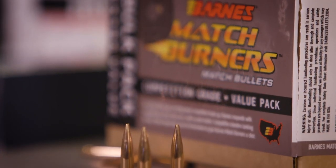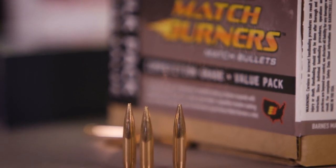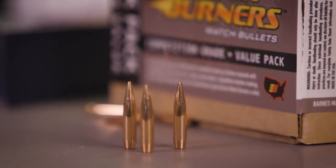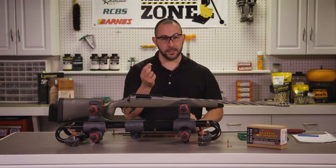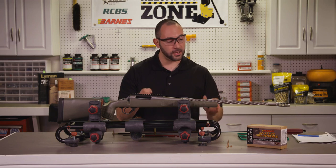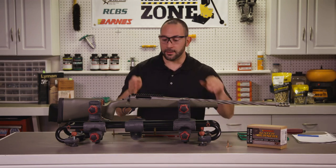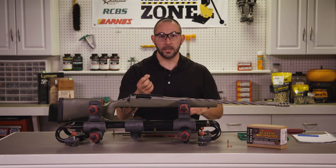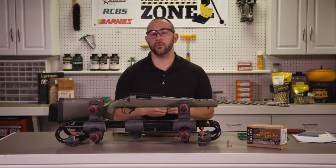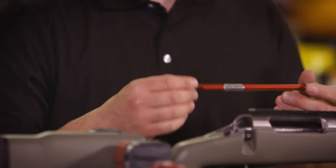So for our 6.5 Creedmoor, we're going to use these Barnes Match Burners. We've used the projectile in other experiments and we found it to be super accurate, but we've never actually fired a factory round through this gun with this bullet. So we're going to find a good starting point for our overall length.